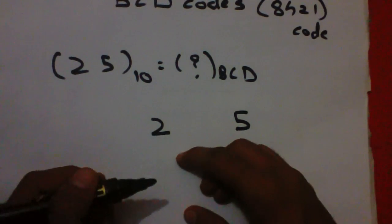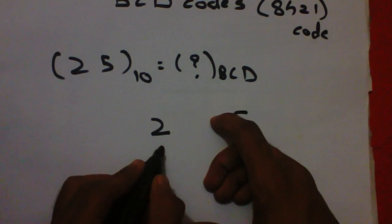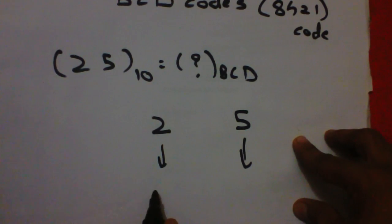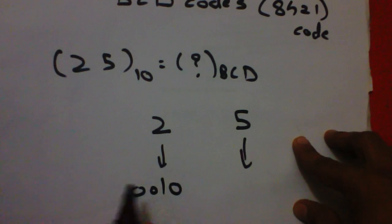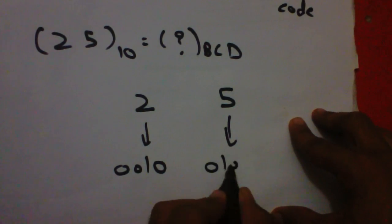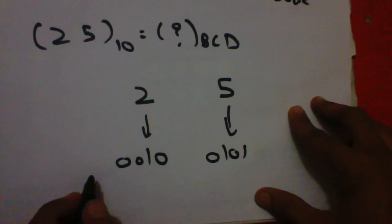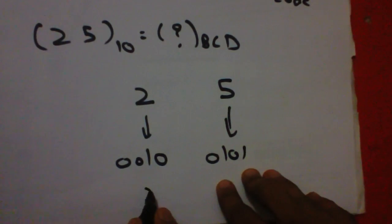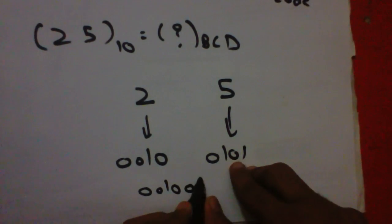Now we will calculate the equivalent binary number of 2 and 5. The binary number of 2 is 0010, and binary number of 5 is 0101. So the equivalent BCD number of 25 is 00100101.